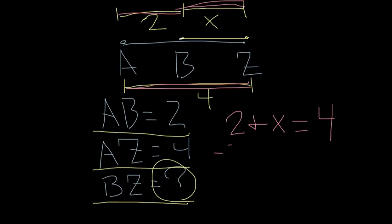Now, if we wanted to solve this out, we could subtract 2 from both sides. It's going to go away. We're going to get X equals 2, and we're done. We know BZ is going to equal 2.